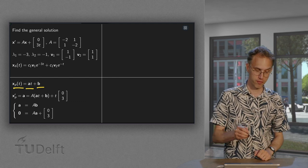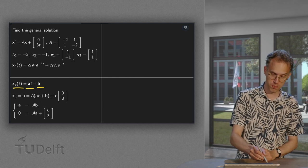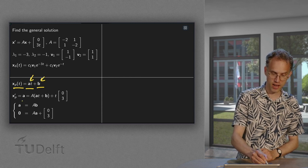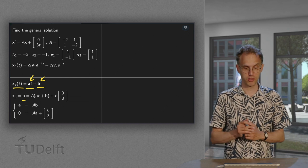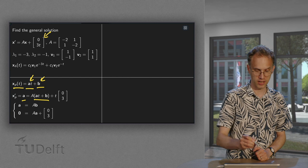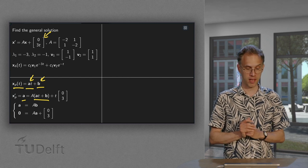Now, what do we do? First, we compute the x' particular. Well, then the b drops out and here we are only left with a. And this is equal to A times x' particular plus this part here, this non-homogeneous part.